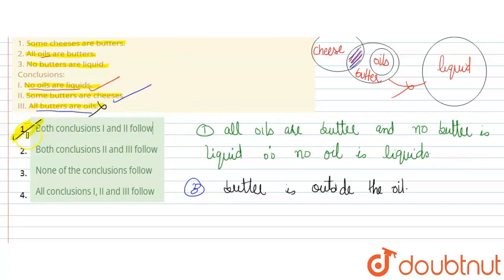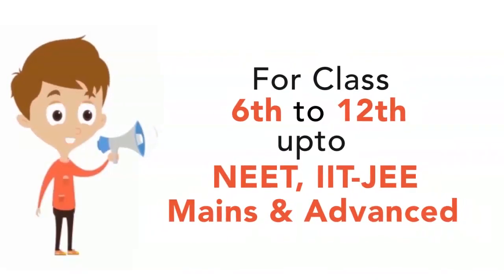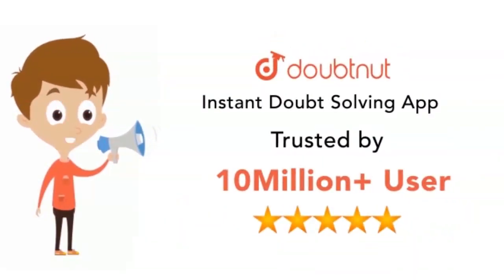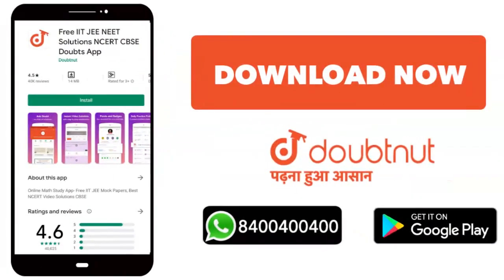So option number one, both conclusions first and second follow, is the correct answer. Thank you. For classes 6 to 12, NEET, IIT JEE Mains and Advanced level, trusted by 10 million plus students. Download Doubtnet app today and get your doubts solved.